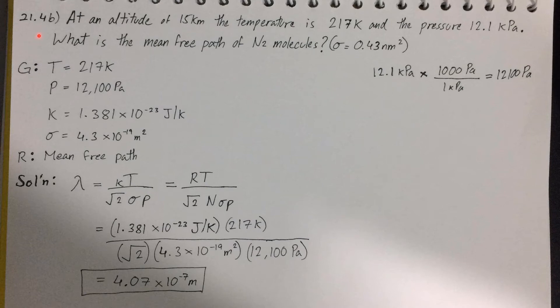Hello everyone. Today, my problem is: at an altitude of 15 kilometers, the temperature is 217 kelvin and the pressure 12.1 kilopascals. What is the mean free path of the nitrogen gas molecules?